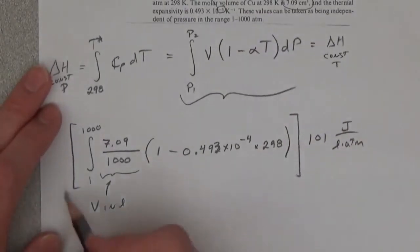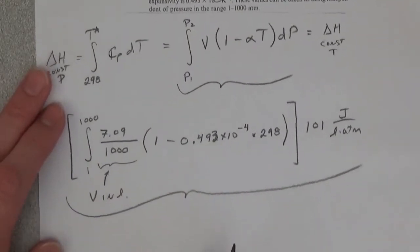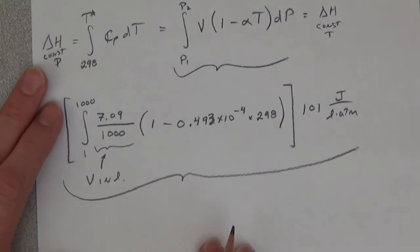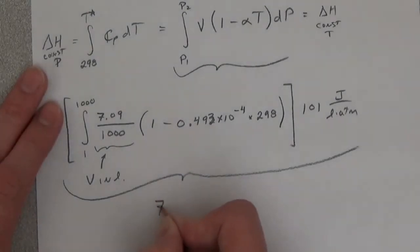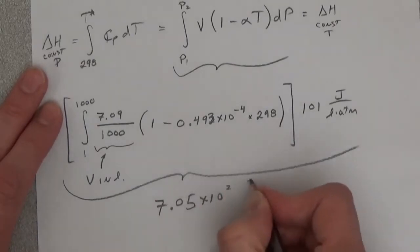And if you do this, what comes out of this is 7.05 times 10 to the 2 joules per mole.